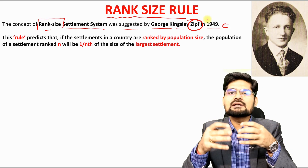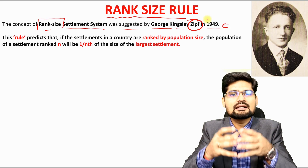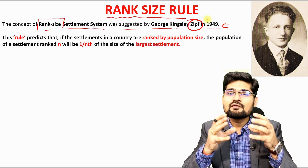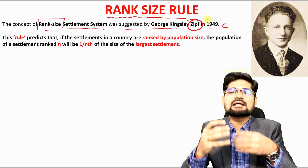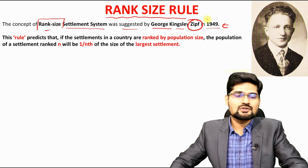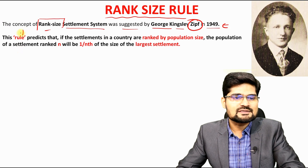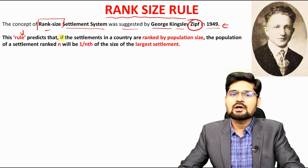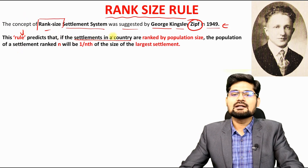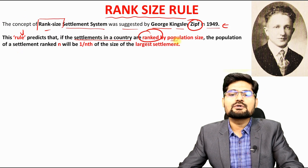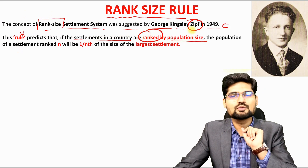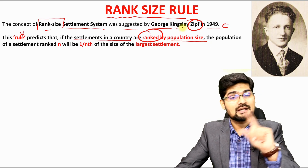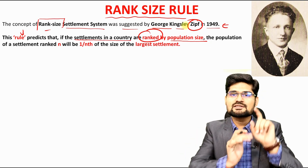Since then, more quantitative techniques were applied to analyze the locational aspects of settlements. When this concept came, it was a statistically grounded concept. The rank size rule predicts what happens if the settlements in a country are ranked by population size. In the rank size rule, the ranking is on the basis of population size.